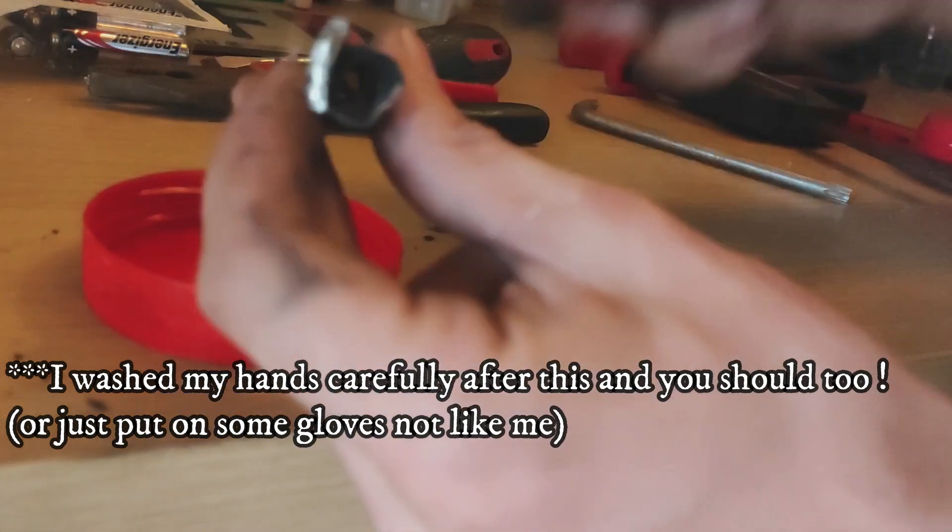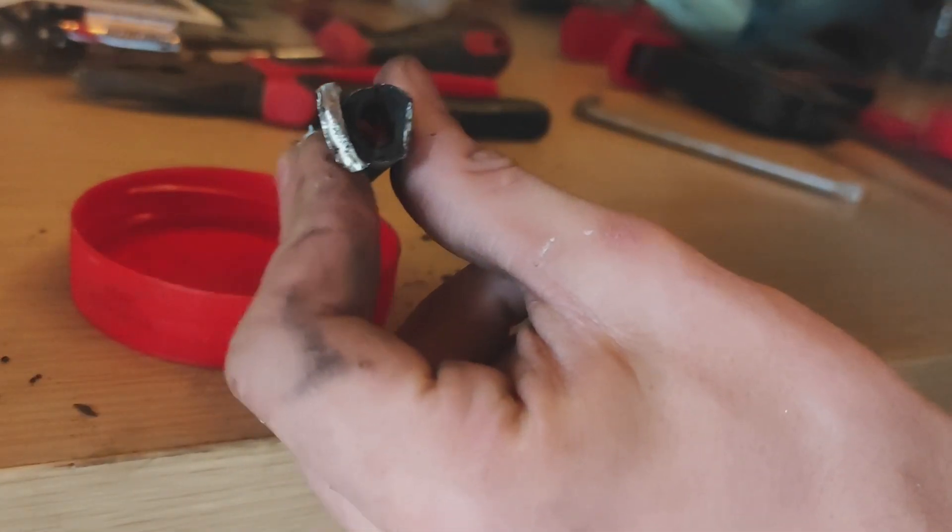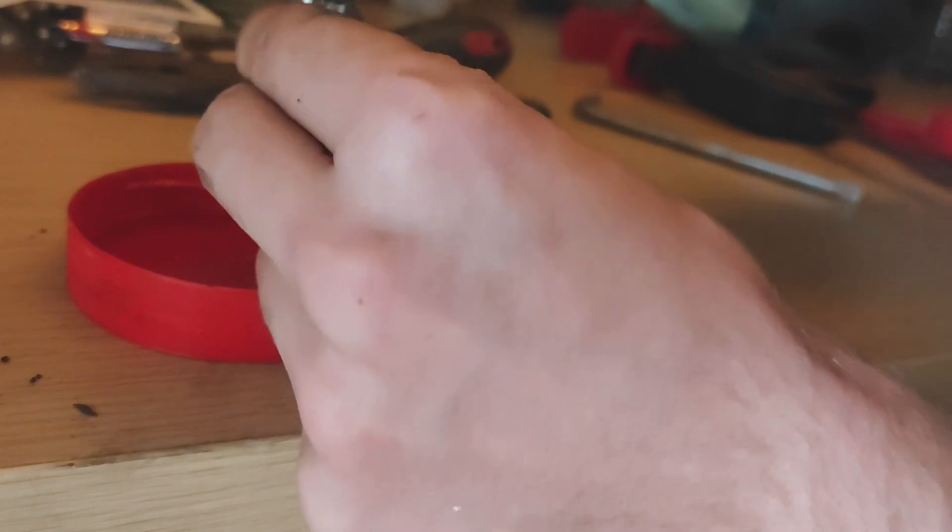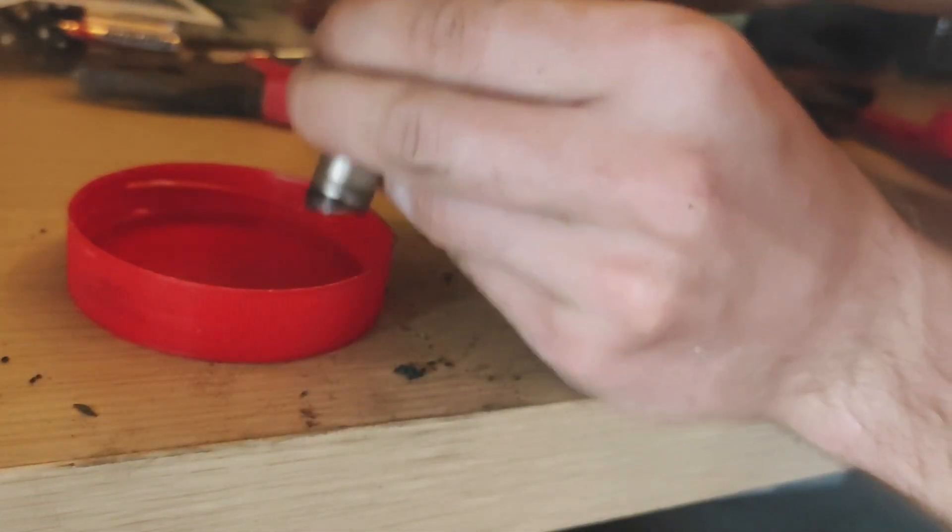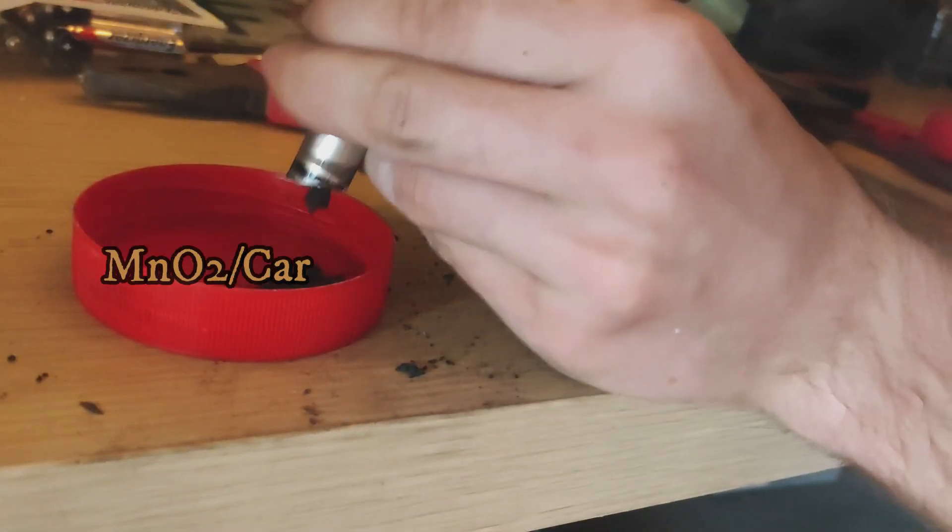Then we simply scrape off all the manganese dioxide. This can be done with a pointy tool, and it's easier when the metal casing gets deformed as it breaks the chunks inside.